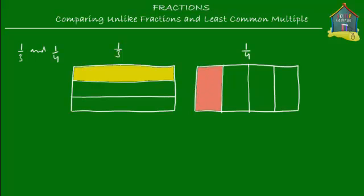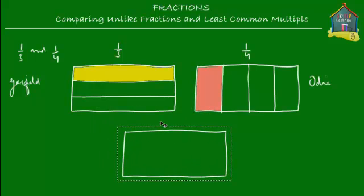Let's say Garfield got one-third of the lasagna while Odie got one-fourth of the lasagna. It's easy when you have two lasagnas to mark two unlike fractions. But what if you have only a single lasagna and you have to mark both one-third and one-fourth on it — how many slices should you cut it into? You must convert these unlike fractions to like fractions.